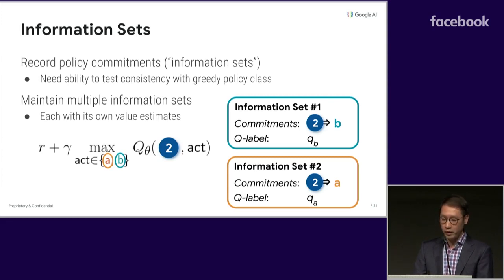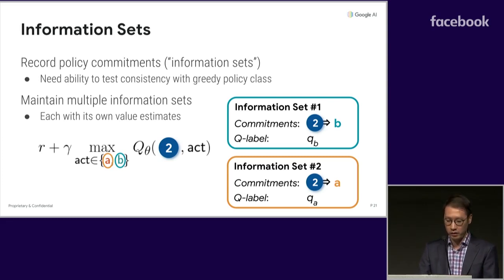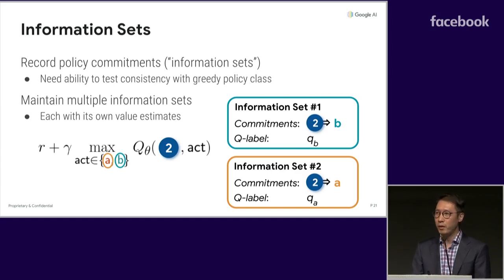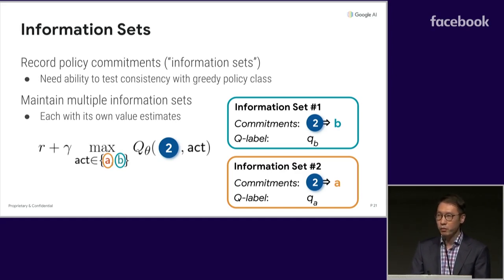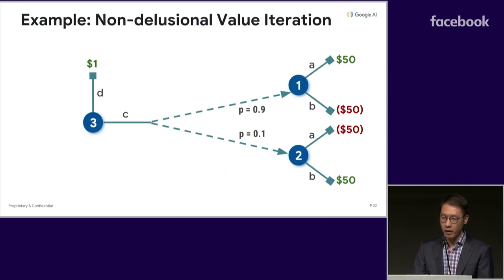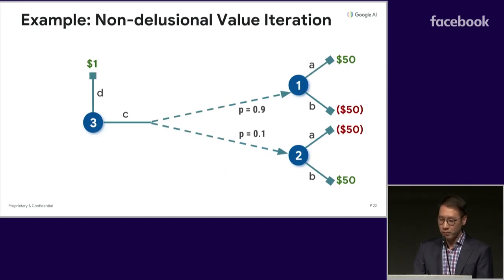Second, because we don't know a priori which policy commitments might conflict with one another, we need to maintain multiple information sets, each with its own value estimates. It's best to illustrate this on a running example done in the style of value iteration.